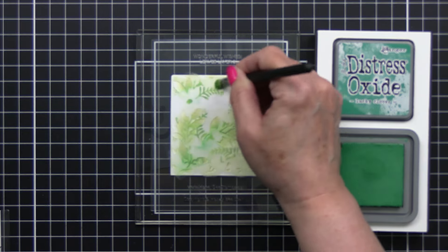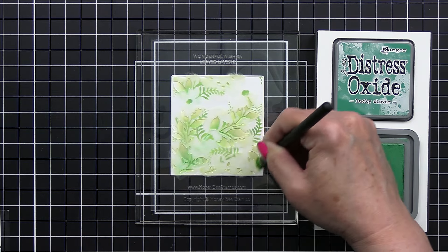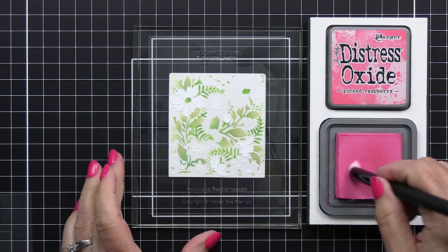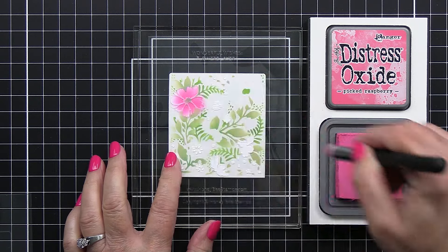I am struggling a little bit with this new video camera and getting it to focus sometimes, but here you can see I'm adding a little bit of that Lucky Clover just over the Old Paper to give it a little more definition and interest.